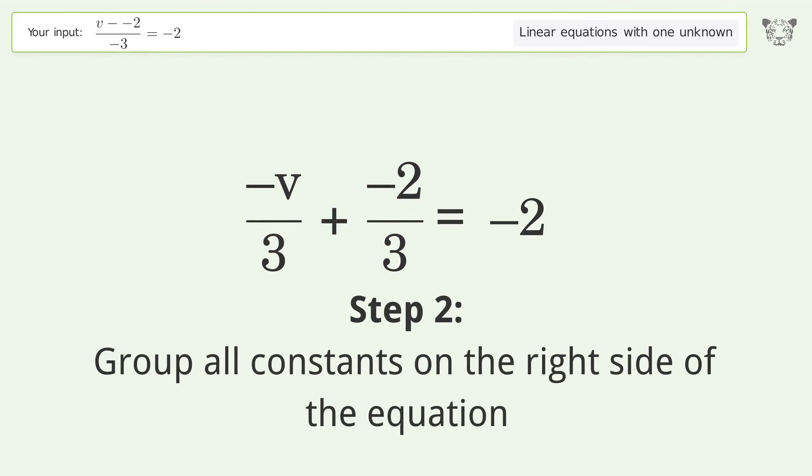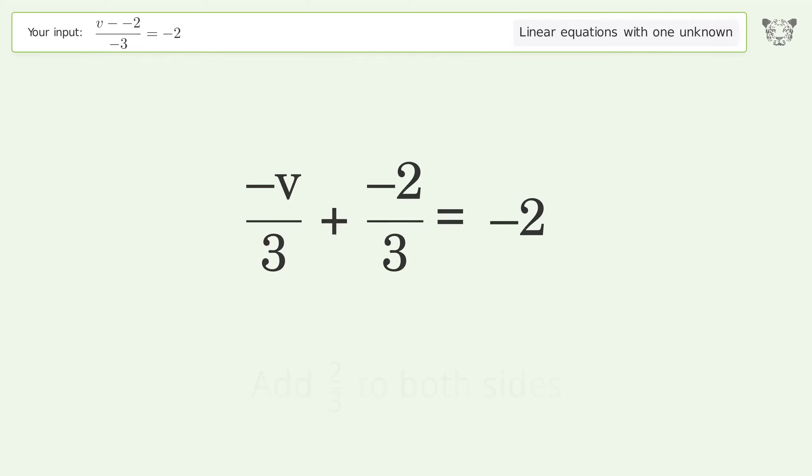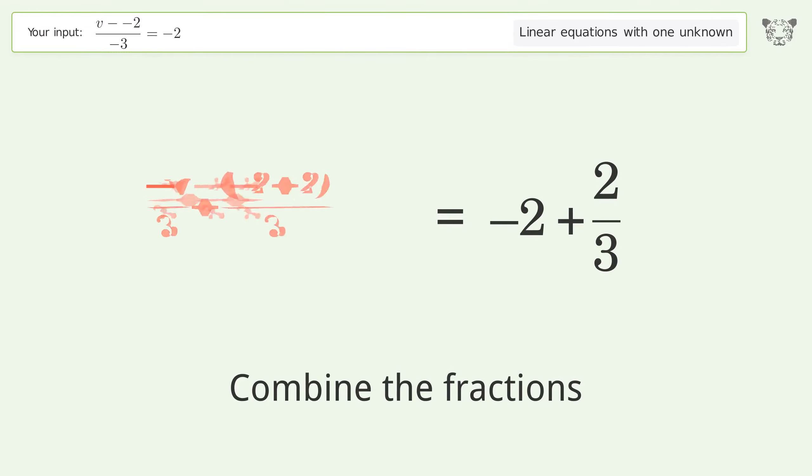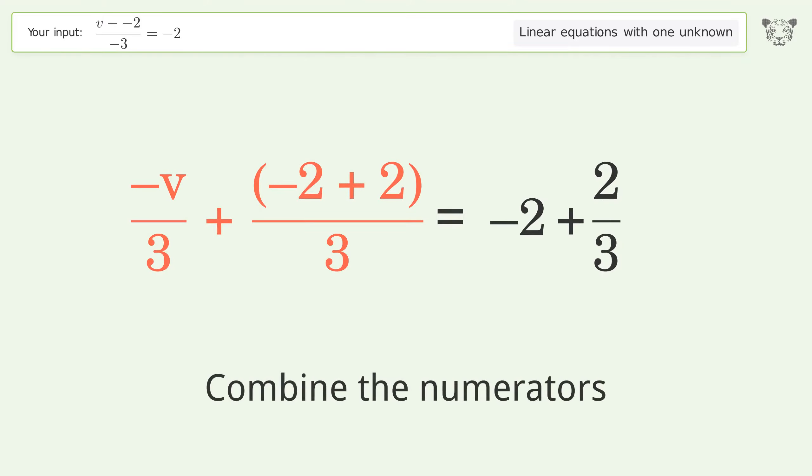Group all constants on the right side of the equation. Add 2 over 3 to both sides. Combine the fractions. Combine the numerators.